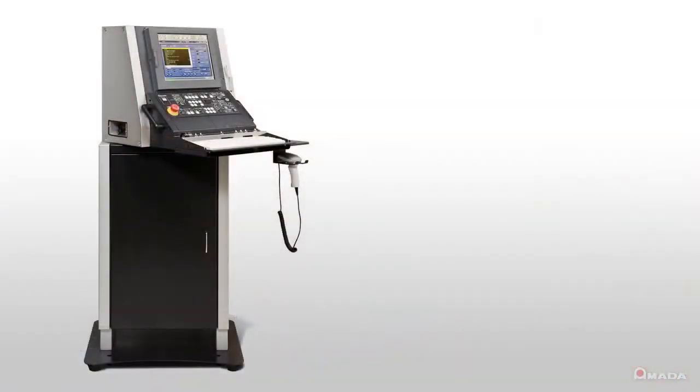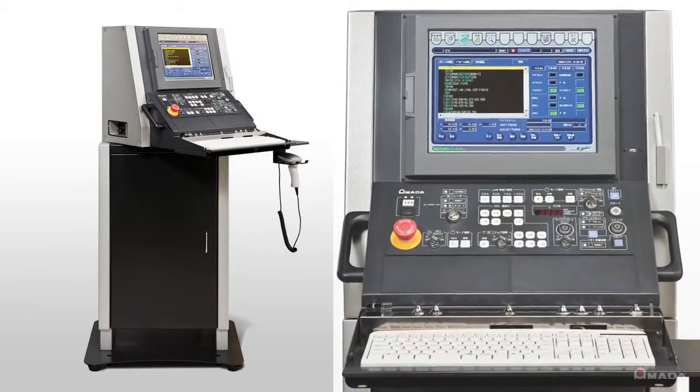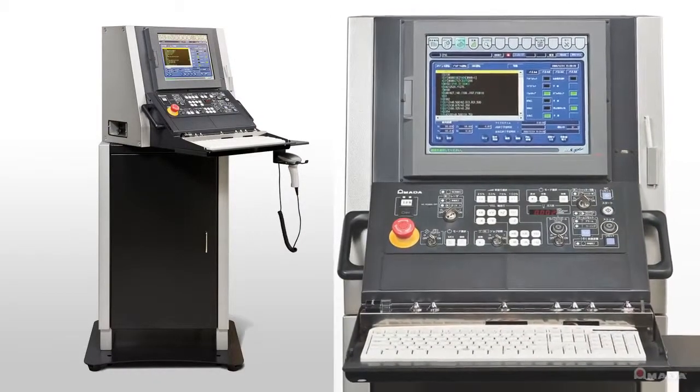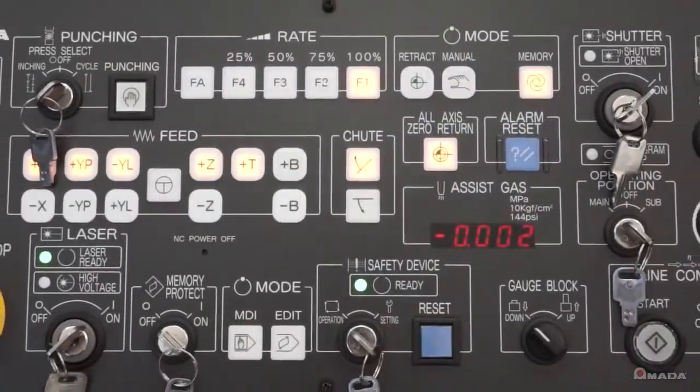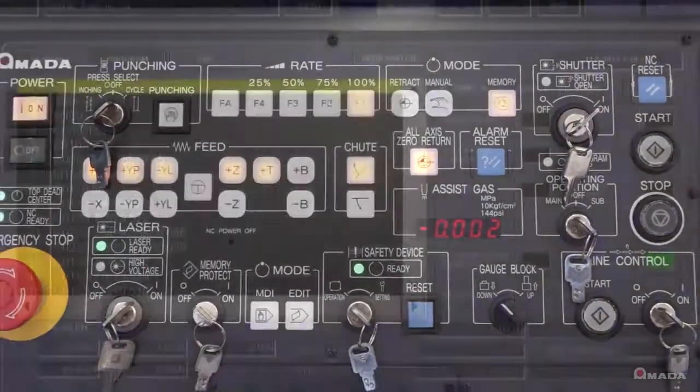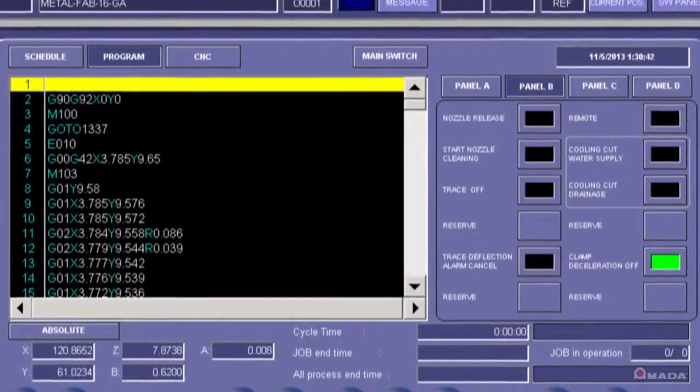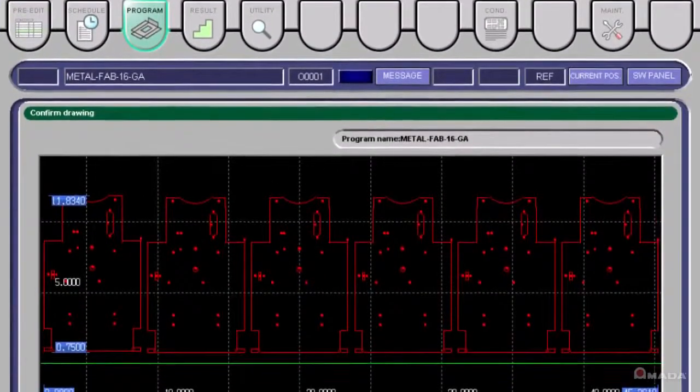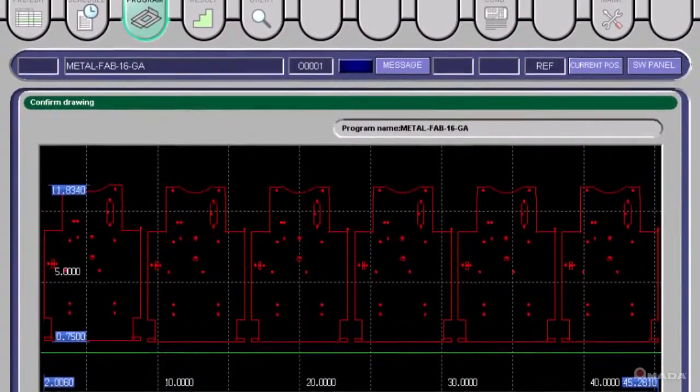The AM NC control is loaded with many features which allow operators to easily operate and maintain the machine. It's a Windows-based system that can retrieve programs through your company's network. All of the information that the operator needs to see is displayed on a user-friendly interface.